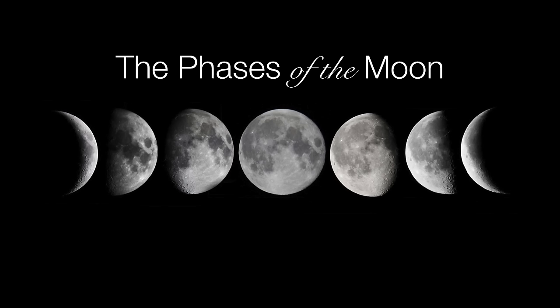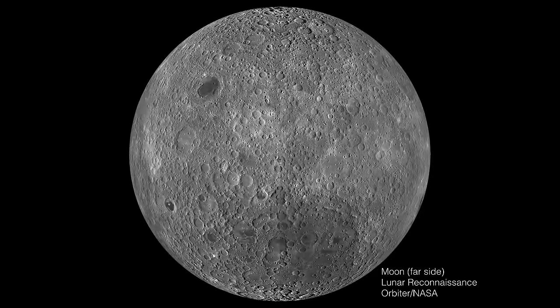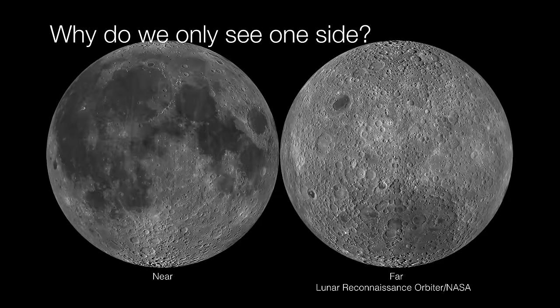Before we describe the phases of the moon, let's clarify one rather important point: we always see the same side of the moon. It doesn't matter what phase it's in. If you look at the features on the moon's surface, we're always seeing the same near side. The near side has light regions but also many darker regions known as mare, while the far side is dominated by highland regions.